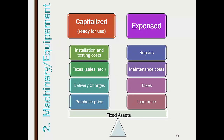Thinking back to Zoomie Pizza, you can identify their fixed assets — land, building, machinery. They probably had to purchase land, pay commissions, pull permits, and then build or renovate a facility from scratch. You can also think about the machinery they bought — all of that fits into these fixed asset categories we've been discussing.